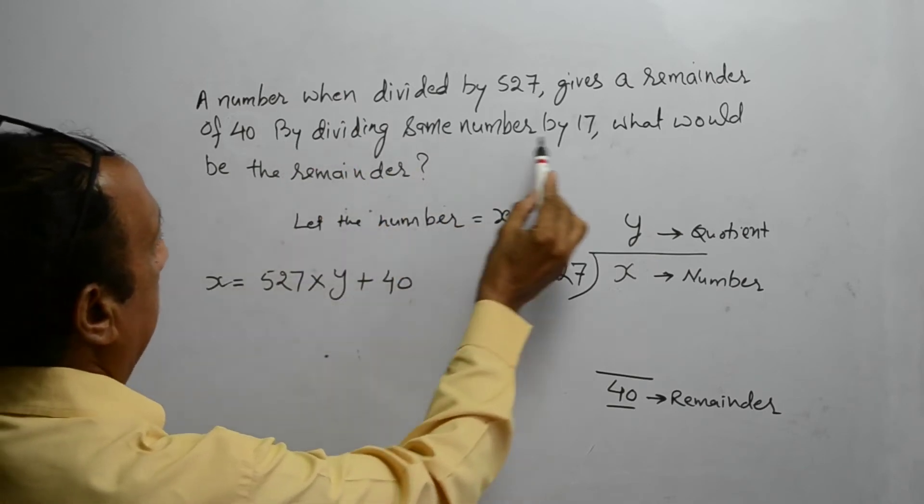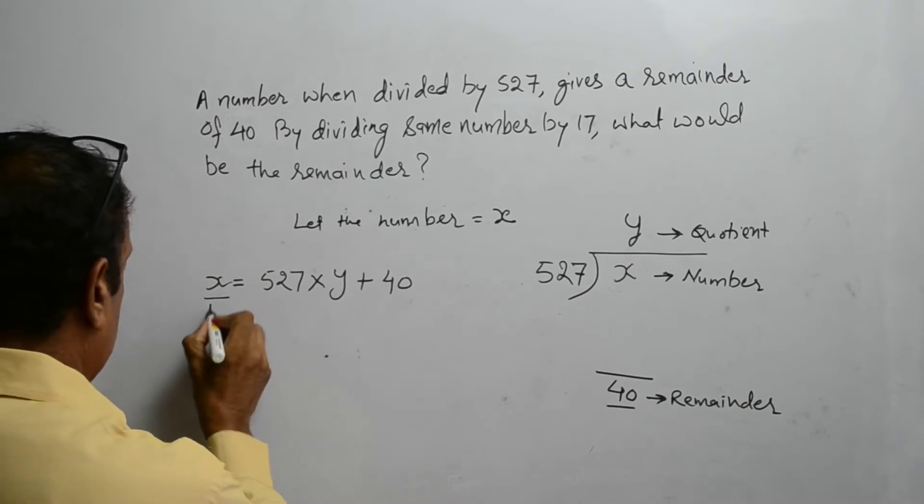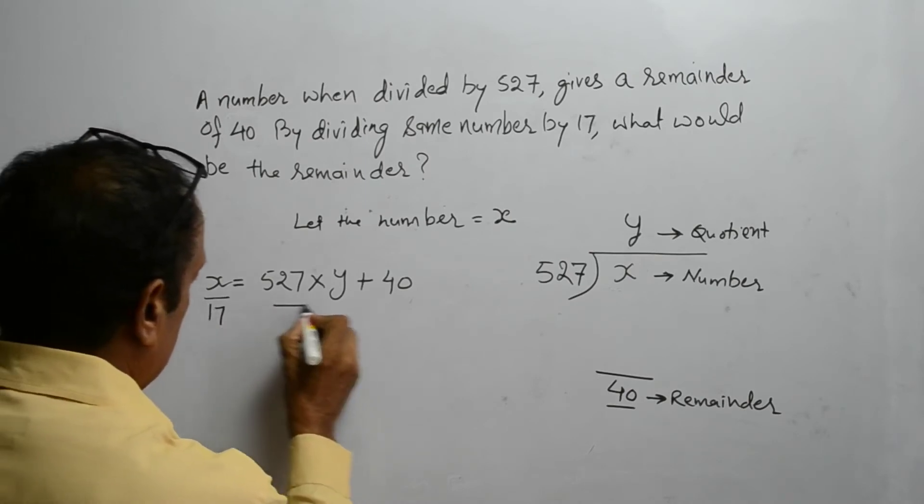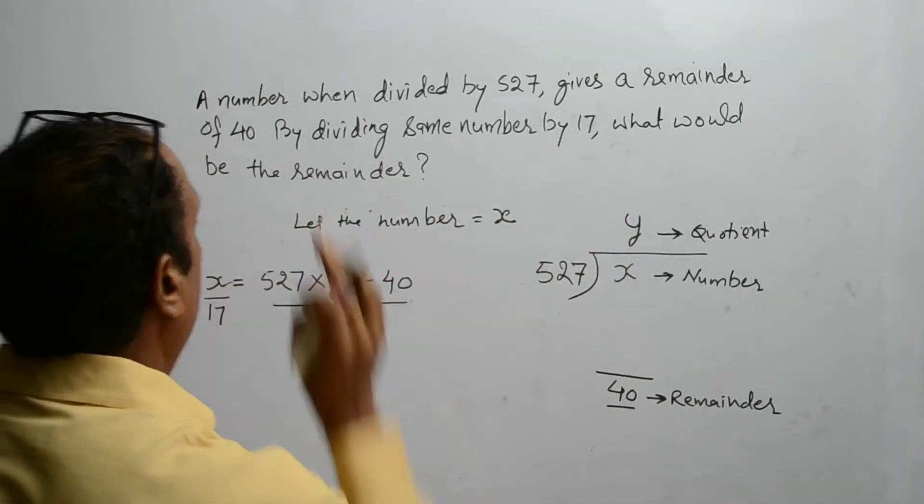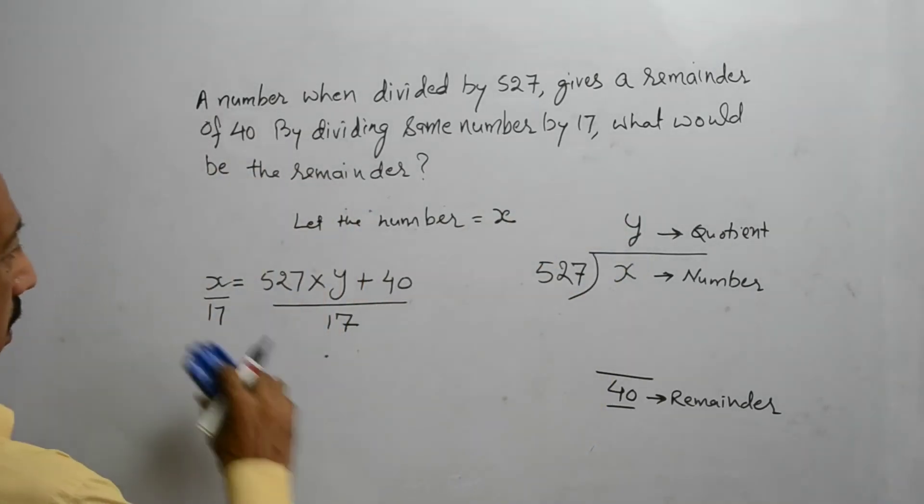By dividing the same number by 17, what would be the remainder? Now, when we solve it...